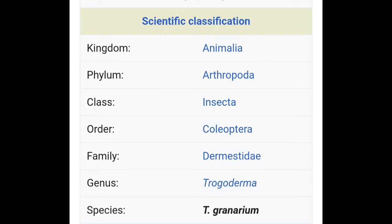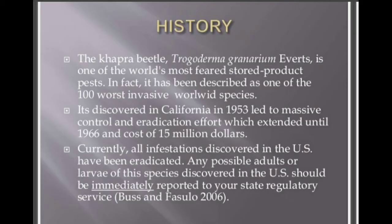Next is history. The Khapra beetle is one of the world's most feared stored product pests. As we all know, it is a stored grain pest and it was discovered in California in 1953. Currently, all of the infestations discovered in the USA have been eradicated.